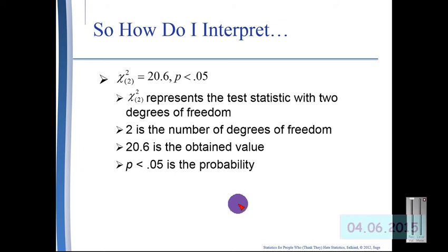By now, writing out statistics tests in APA format should be familiar to you. It is always the name of the test equals, then the obtained statistic, and then the P of less than 0.05.